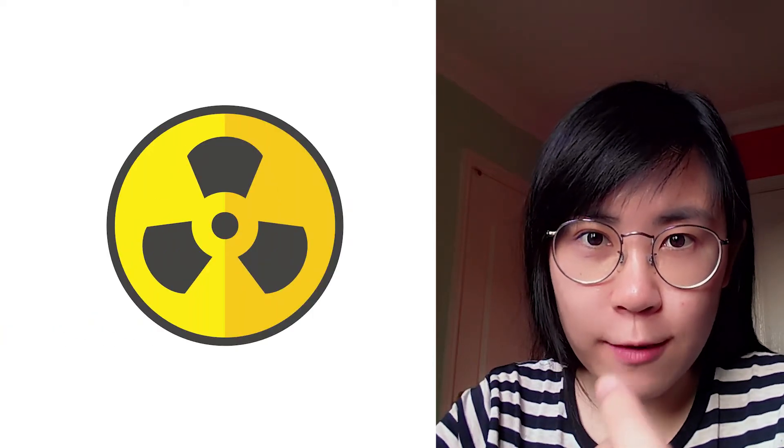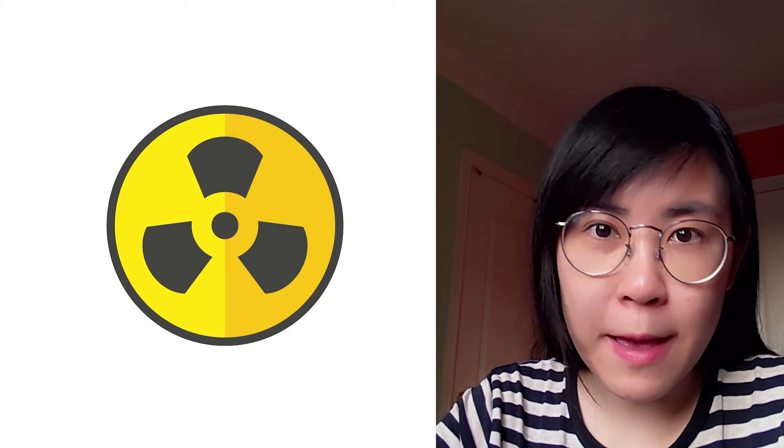Radioactive decay is a random process where a nucleus loses energy by emitting radiation. Radioactive nuclei might decay by emitting alpha particles, beta particles, or gamma rays to become more stable.